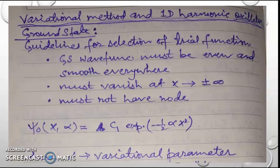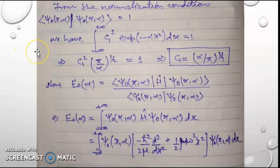All these criteria fit well into the Gaussian function. This Gaussian function is expressed with the variational parameter alpha as psi naught of x and alpha equal to c1 times exponential of minus half alpha x squared, where alpha is the variational parameter and accounts for the width of the Gaussian function. The amplitude c1 can be determined from the normalization condition of the ground state wave function.